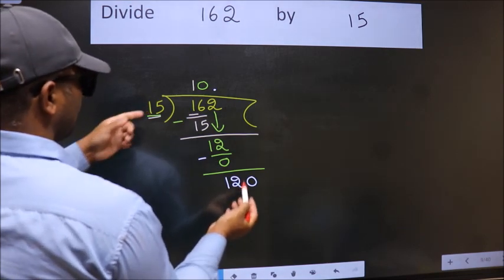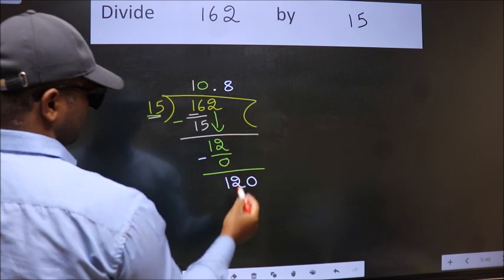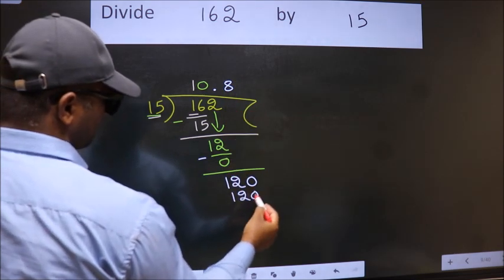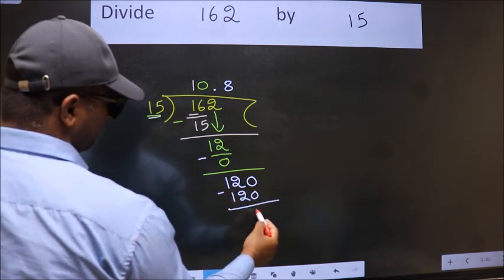15 times 8 is 120. Now we subtract, we get 0.